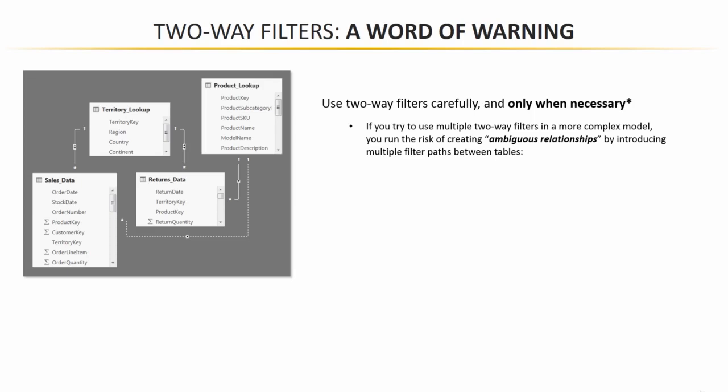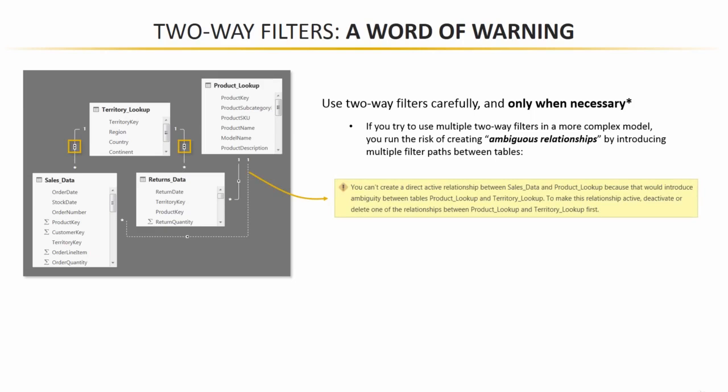And in fact, if you try to use multiple two-way filters in a more complex model like this, you run the risk of creating something called an ambiguous relationship because you're essentially introducing multiple filter paths between tables that could potentially contradict each other. So consider this data model shown here on the left. We've got the same three tables that we've been looking at, plus now a product lookup table as well. And you'll notice that there are two bi-directional filters here from territory lookup down to sales and down to returns. What's important to call out here is that only one of the relationships from the product lookup table to the data tables can be active at one time. If you tried to activate both, you'd see an error message like this. It basically says you can't create a direct active relationship here because it introduces ambiguity.